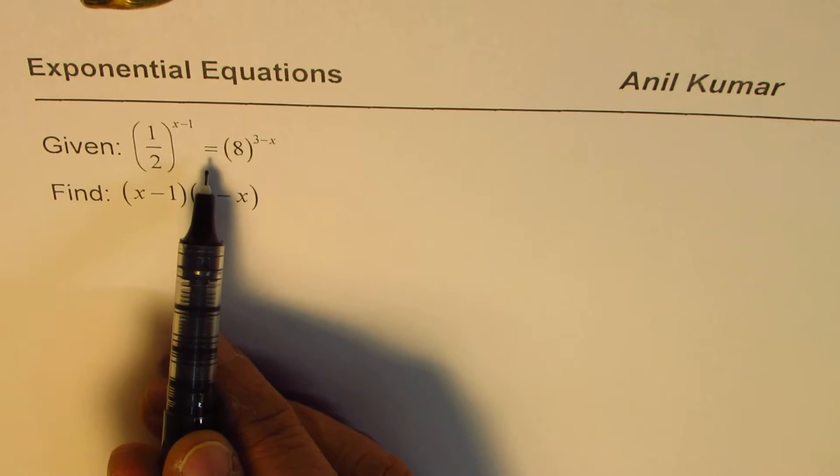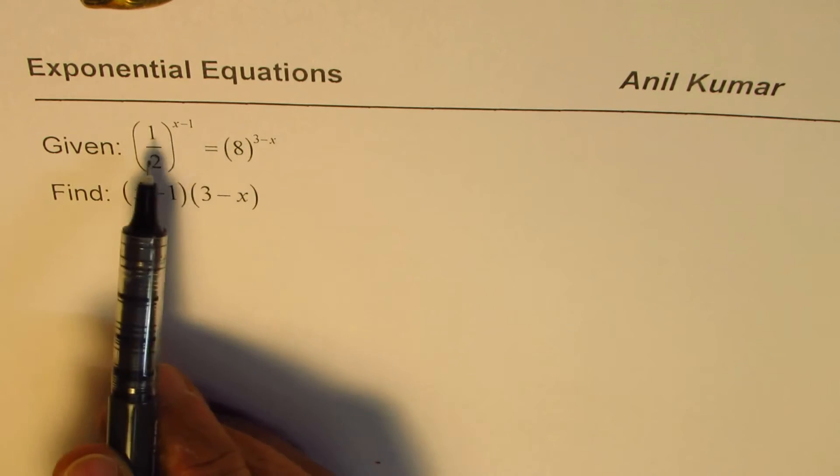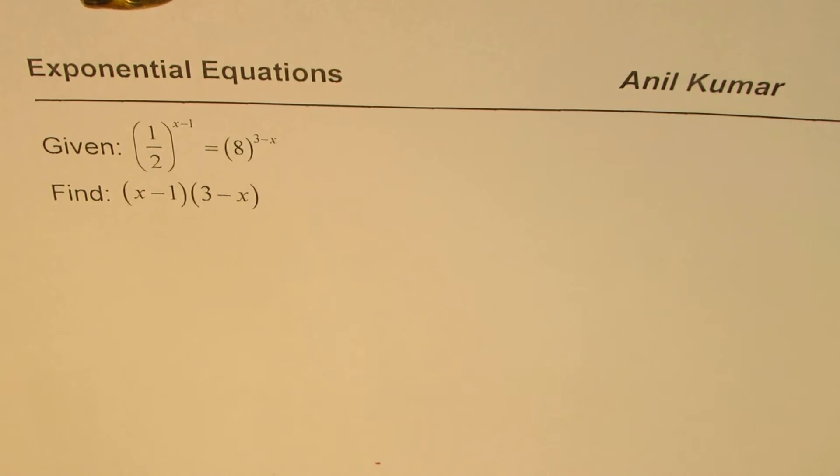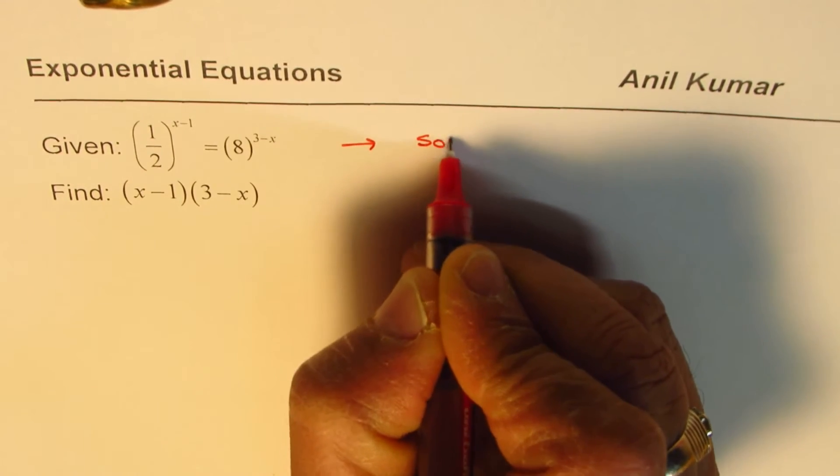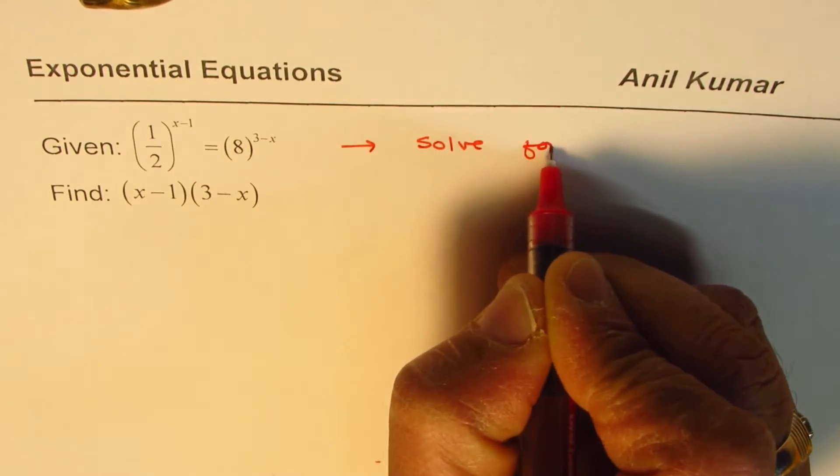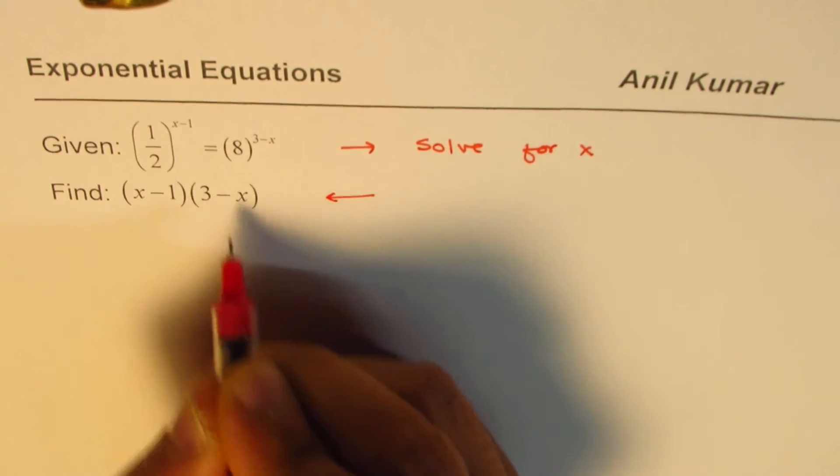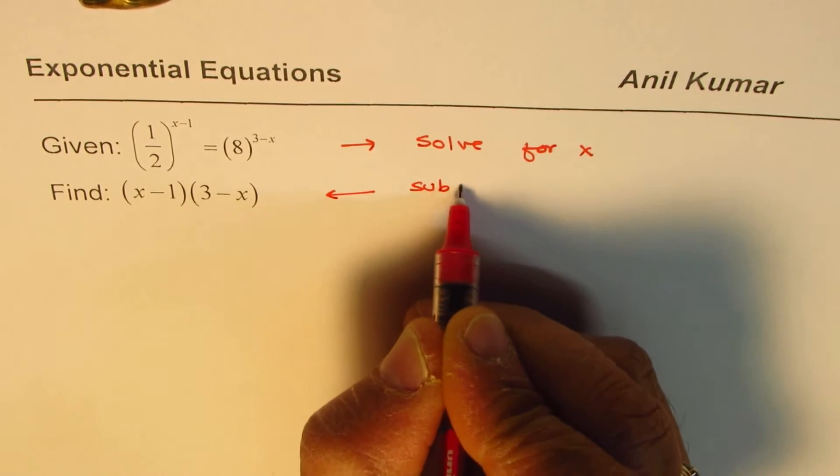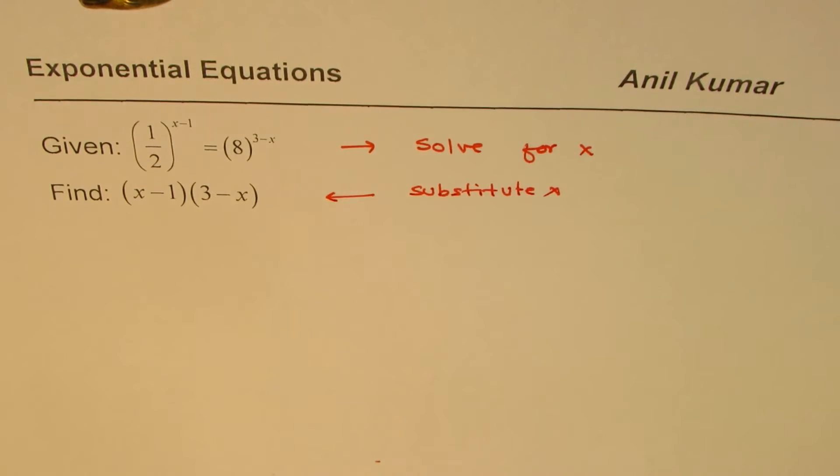We are given (1/2)^(x-1) = 8^(3-x). From here we can find the value of x, right? So from the given equation we will solve for x, and once we have done that, we will substitute the value, we will substitute x and calculate the answer. So that is a simple strategy for this question.